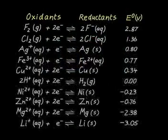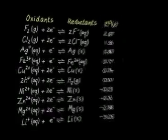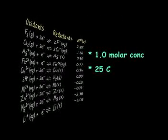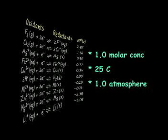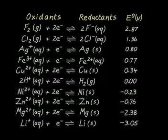The E noughts shown in the table were all derived under standard conditions. That is, one molar concentration of solutions, 25 degrees Celsius, and one atmosphere pressure. If you move significantly away from these standard conditions, not only will the E noughts change, even the order of the reactions may change.